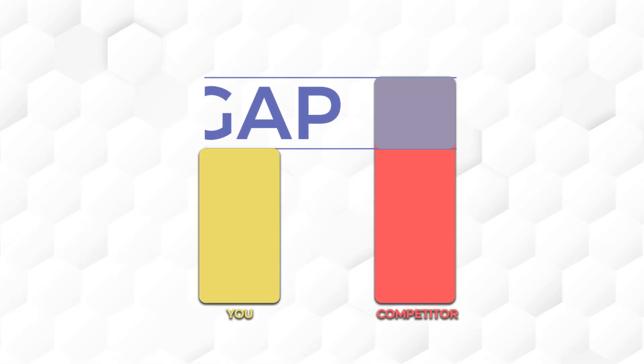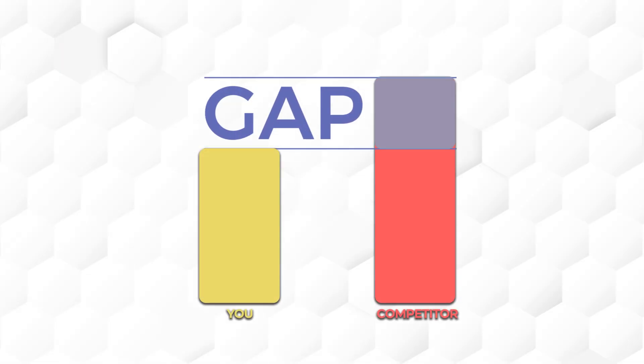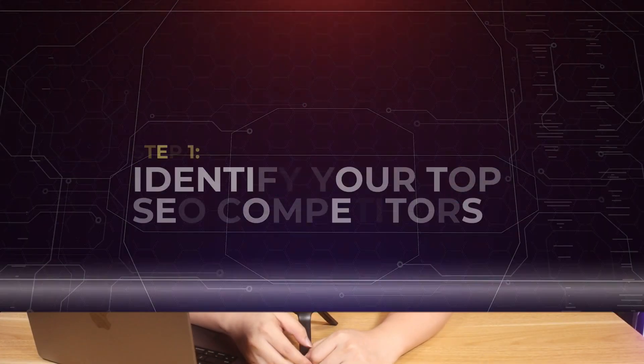A keyword gap is the difference between the keywords your competitors are ranking for but you don't. Identifying keyword gaps helps you discover valuable search terms your competitors are targeting, giving you opportunities to improve your SEO strategy and gain more organic traffic. But the question is, how do you do it? Let's go through the steps.